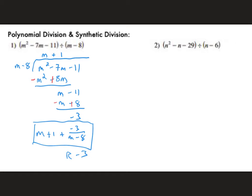For synthetic division: take the dividend and make a row of coefficients — 1 (for n²), negative 1 (for n), and negative 29. Take the opposite of the divisor's constant (opposite of negative 6 is positive 6) and put it in a box. Drop the first term straight down, multiply by 6, write the result, add, multiply by 6 again — leaving you with 1 as the final value.